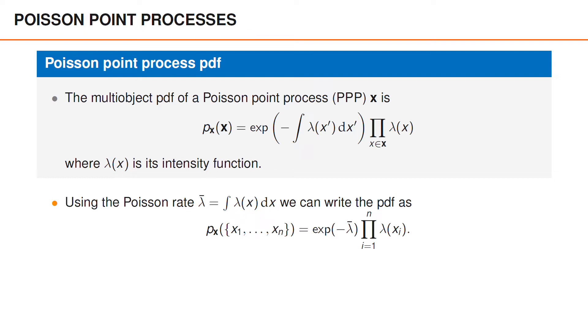The new expression is instead for a multi-object PDF. The fact that it does not contain a factor 1 divided by n factorial matches the relation between ordered PDFs and multi-object PDFs mentioned in the video about multi-object PDFs.